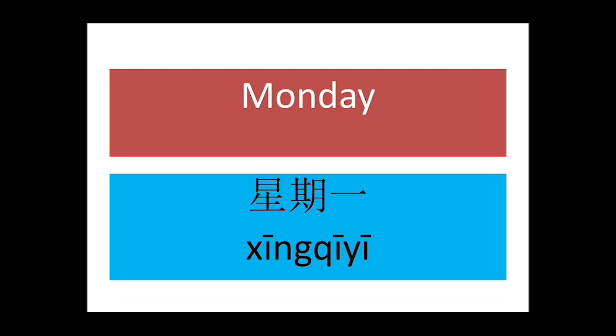Now we will study the names of the weekdays. The first is Monday. How do we say Monday? Xingqi Yi. Now you know how we say one — one in Mandarin is Yi, and Xingqi means week. So the first day of the week is called Monday: Xingqi Yi. All three syllables have first tone, so we pronounce it as Xingqi Yi.